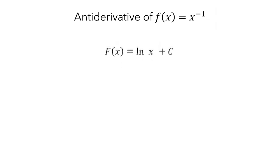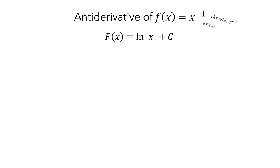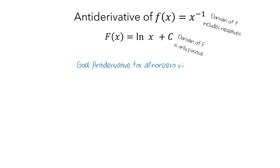There's an issue here, though. The domain of little f — that is, all of the values of x you can use as inputs — includes all non-zero numbers, and in particular includes negative numbers. But the natural log function can't be evaluated at 0 or negative values, so the domain of the antiderivative is only positive numbers. We'd like the domain of the antiderivative to match that of little f, so we need to find an antiderivative for all non-zero values of x.